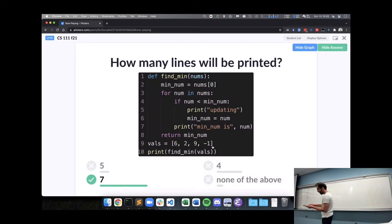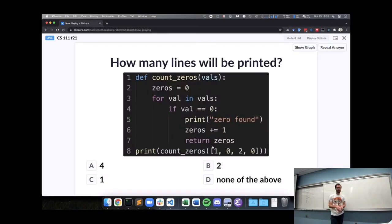Alright, one more function mystery for you - a count_zeros function. Have a couple prints. Once again, how many lines are going to be printed? Four, two, none of the above. We're all pretty confident it's not going to print out once, so please discuss with your neighbors again how you're thinking about what this will do.